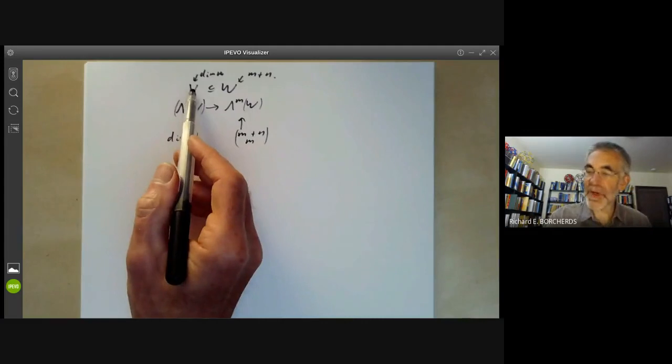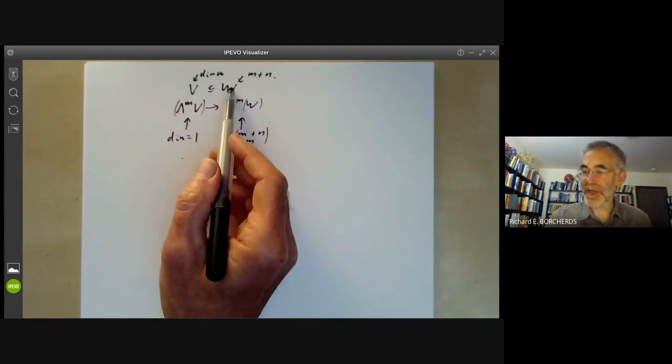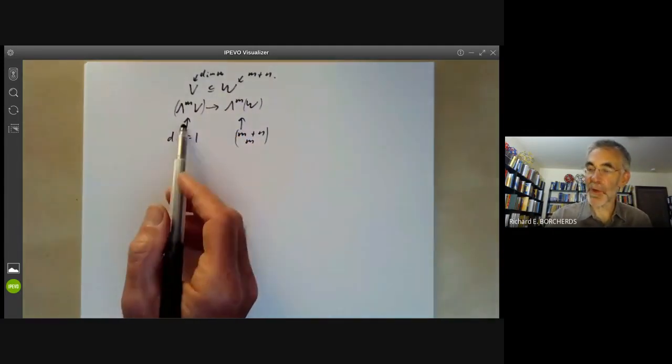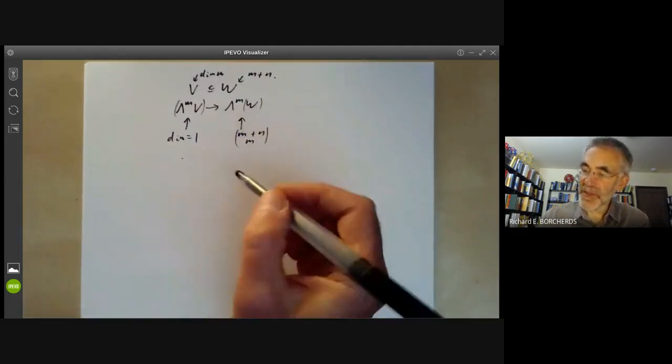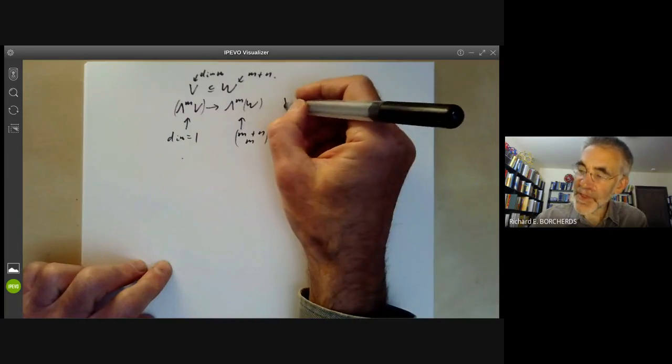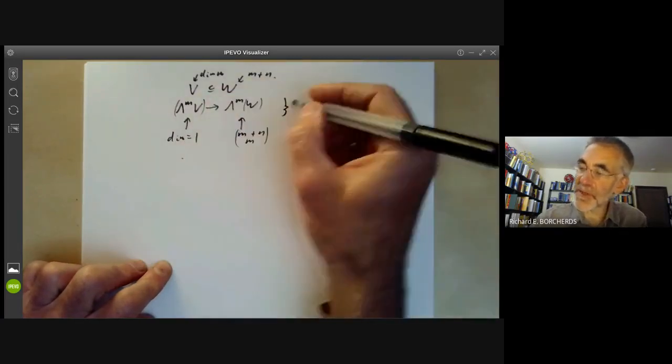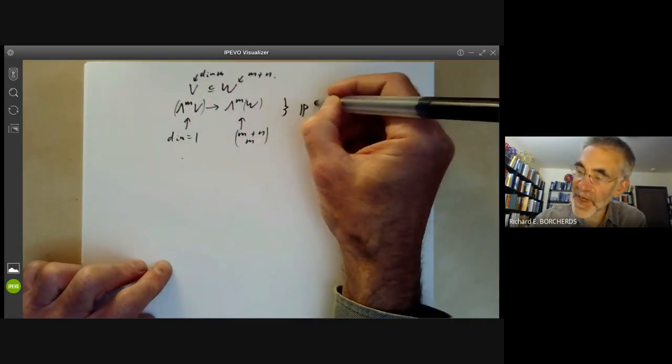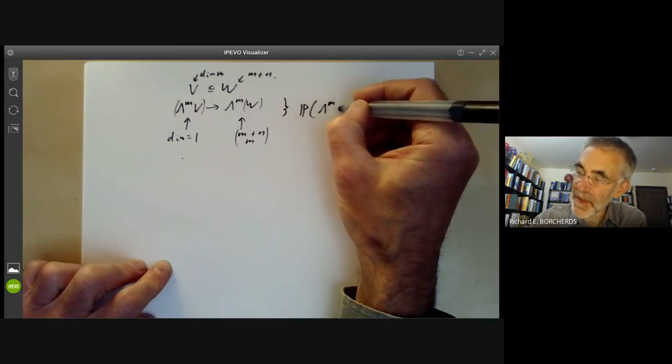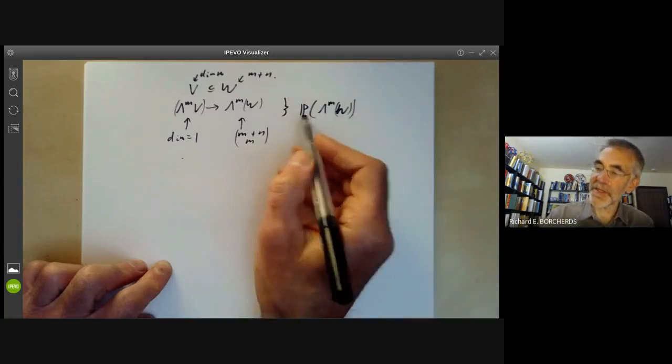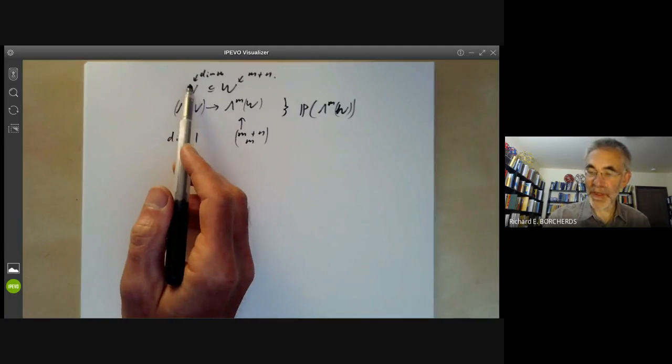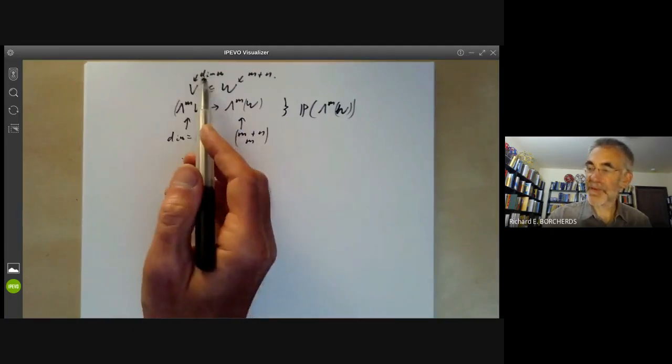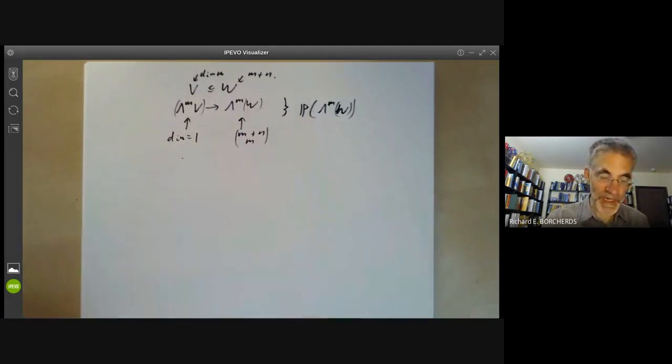So whenever we've got an M dimensional subspace of an M+N dimensional space, we get a one dimensional space inside this larger dimensional space. And a one dimensional subspace of something just corresponds to a point of the projective space. So this is an abstract way of getting from a point of the Grassmannian to a point of projective space.